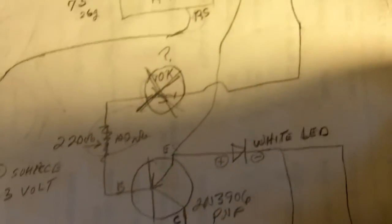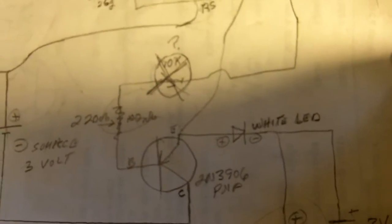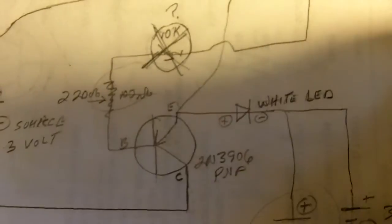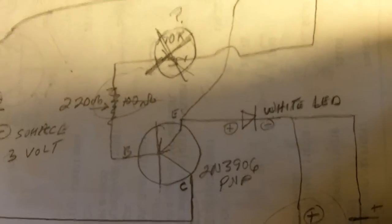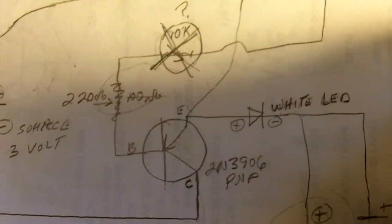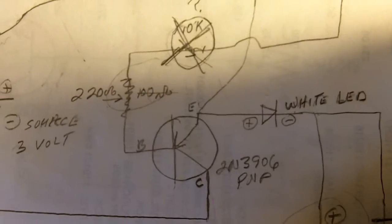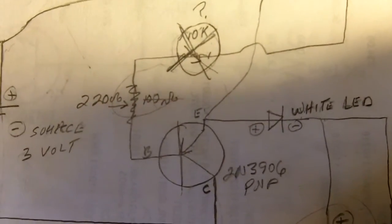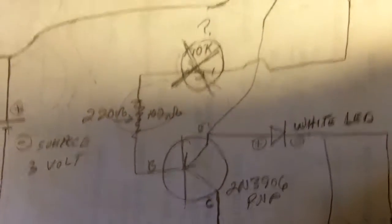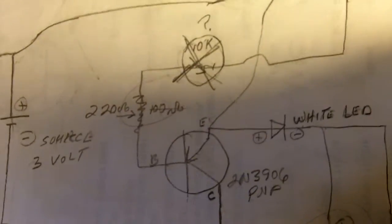And also, on the wiring diagram here, I removed that 10K pot and replaced the 100 ohm resistor with a 220 ohm resistor. That seems to work very well.